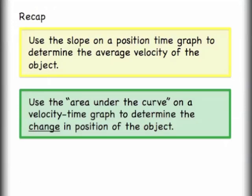Let's recap what we have here. You can use the slope on a position-time graph to determine the average velocity of the object. Also, you can use what we call the area under the curve on a velocity-time graph to determine the change in position of an object. Remember, you can always go back and look at the video again, and I encourage you to try to calculate some of the areas and slopes yourself. But for now, if you think you got everything, let your computer know.